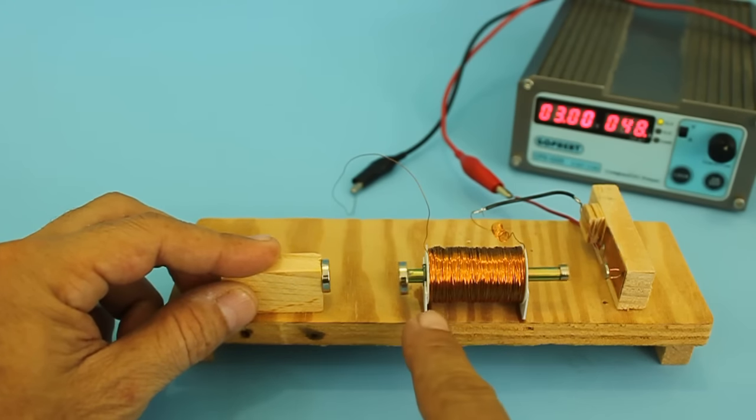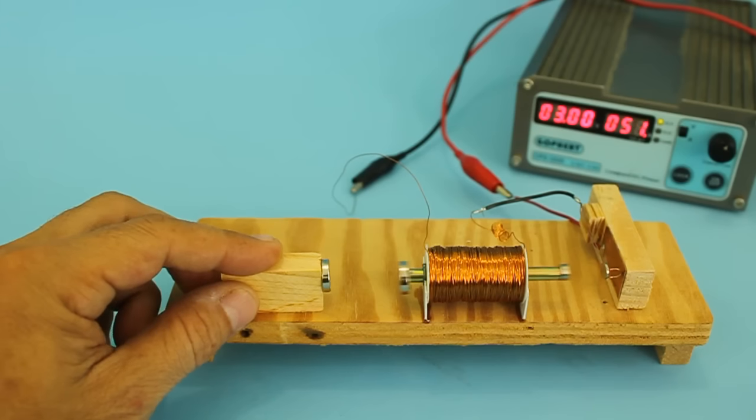Also, the closer the magnet is to the axis, the faster the motor will run.